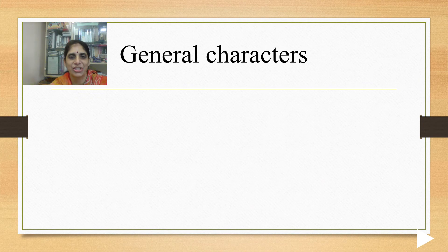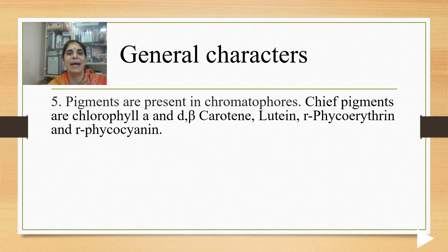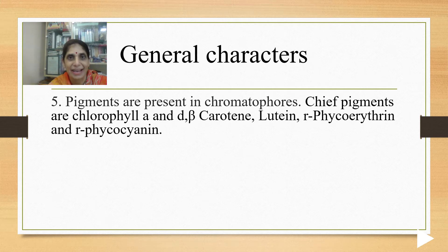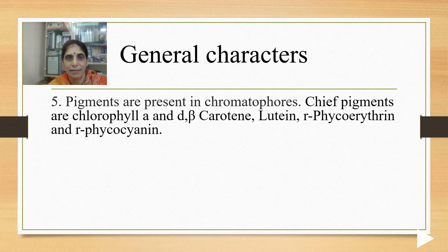Continuing with general characters, pigments are present in chromatophores — 'chroma' means colored. The chief pigments are chlorophyll A and D. Note that chlorophyll B is absent; chlorophyll B is found in Chlorophyta, and chlorophyll C in Phaeophyta. Beta carotene is present, lutein is present, and also r-phycoerythrin and r-phycocyanin.